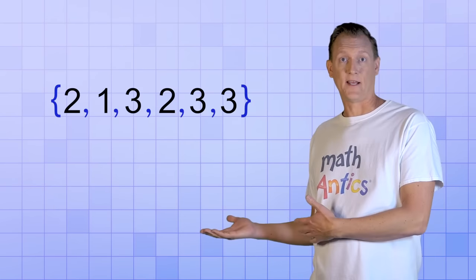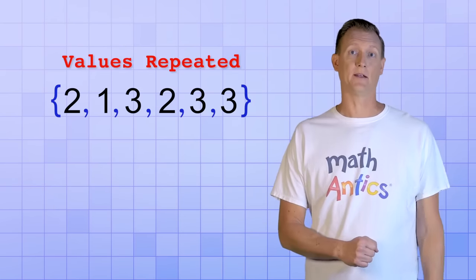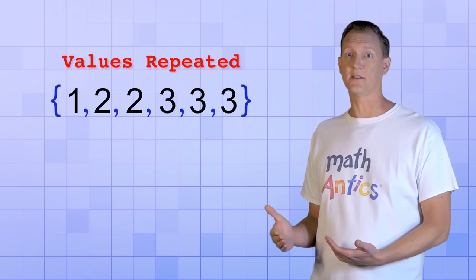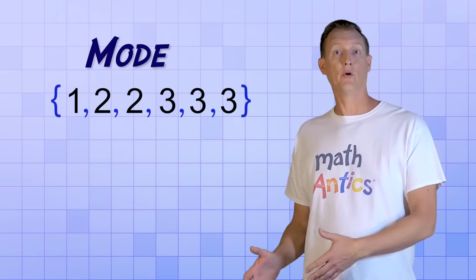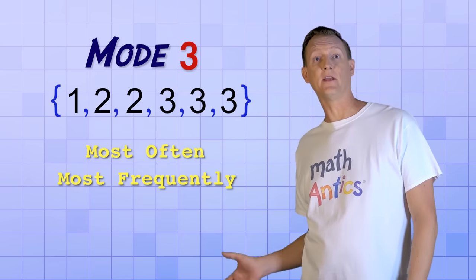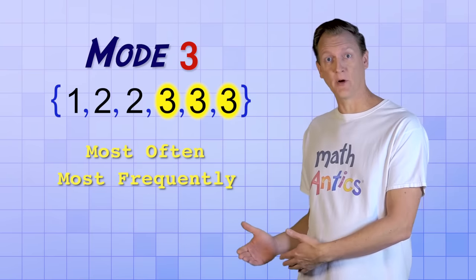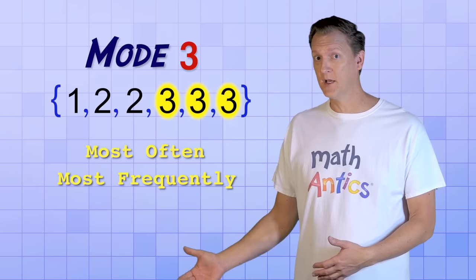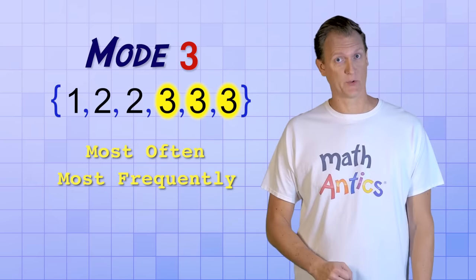But what if you had this dataset? This set has 6 members, but some of the values are repeated. If we rearrange them, you can see that there's 1 1, 2 2's and 3 3's. The mode of this dataset is the value that occurs most often or most frequently, so that would be 3 since there's 3 3's. Now don't get confused just because the number 3 was repeated 3 times. The mode is the number that's repeated most often, not how many times it was repeated.